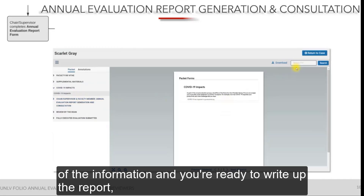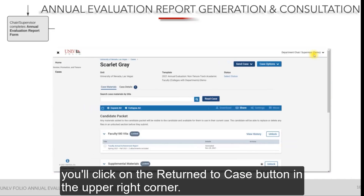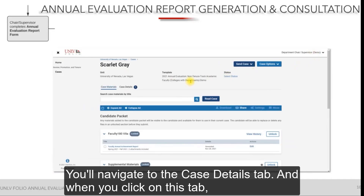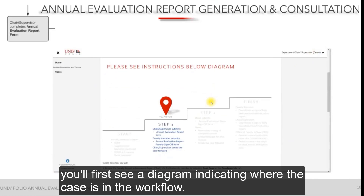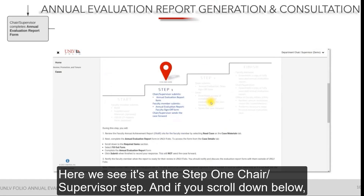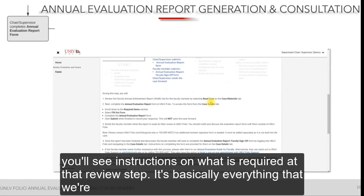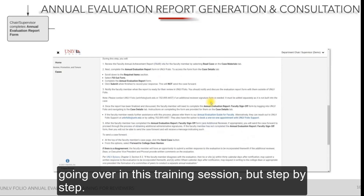After you're done reviewing all of the information and are ready to write up the report, click the Return to Case button in the upper right corner, then navigate to the Case Details tab. When you click on this tab, you'll first see a diagram indicating where the case is in the workflow — here we see it's at Step 1, the chair/supervisor step. If you scroll down, you'll see instructions on what is required at that review step, essentially everything we're going over in this training session, step by step.